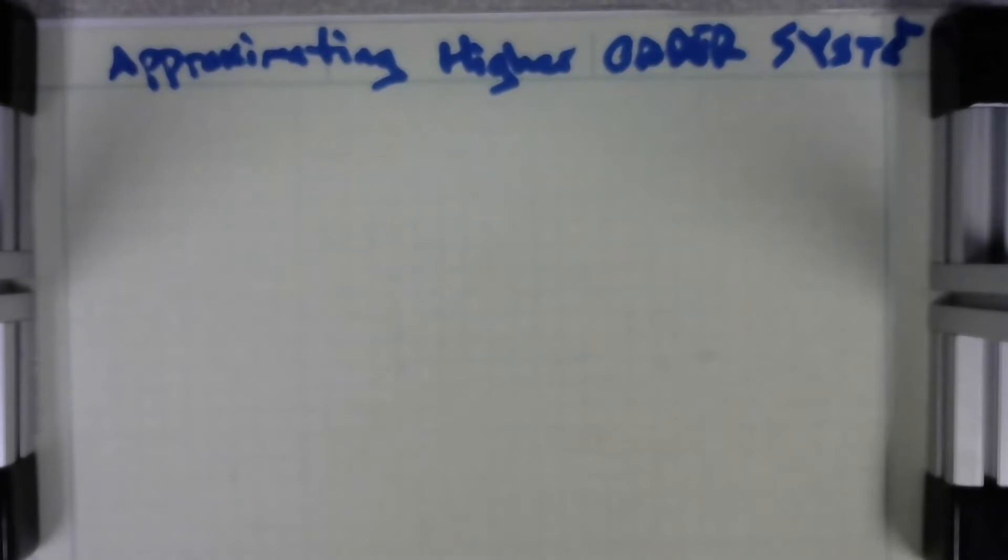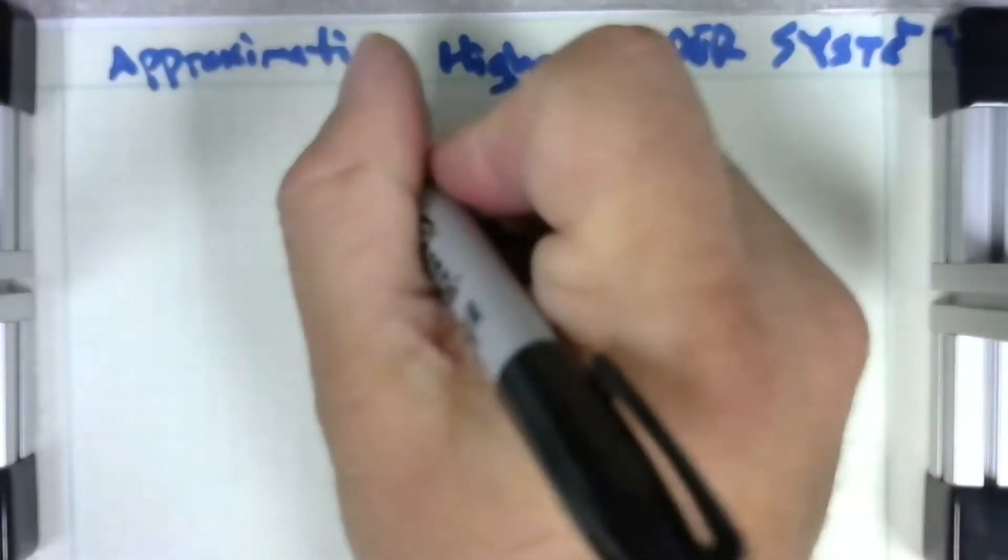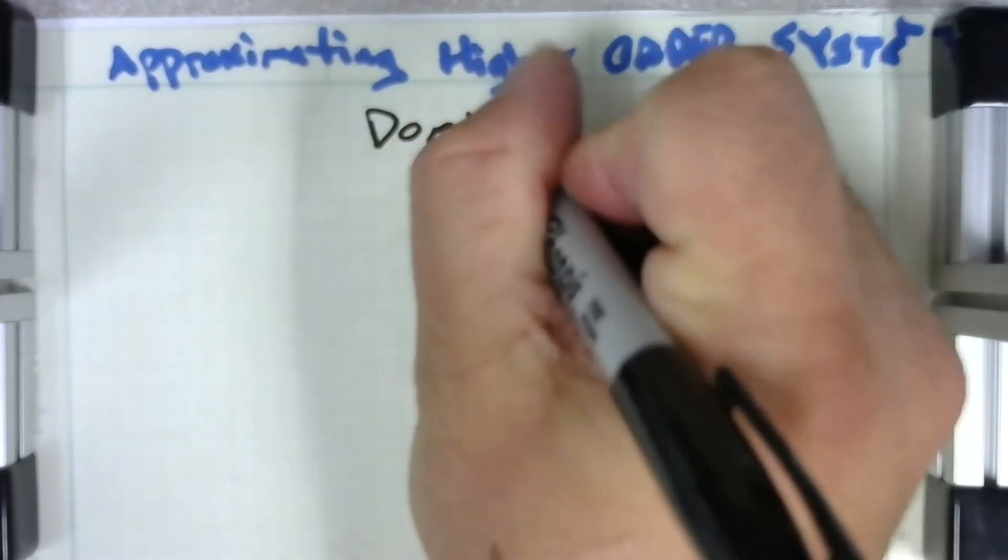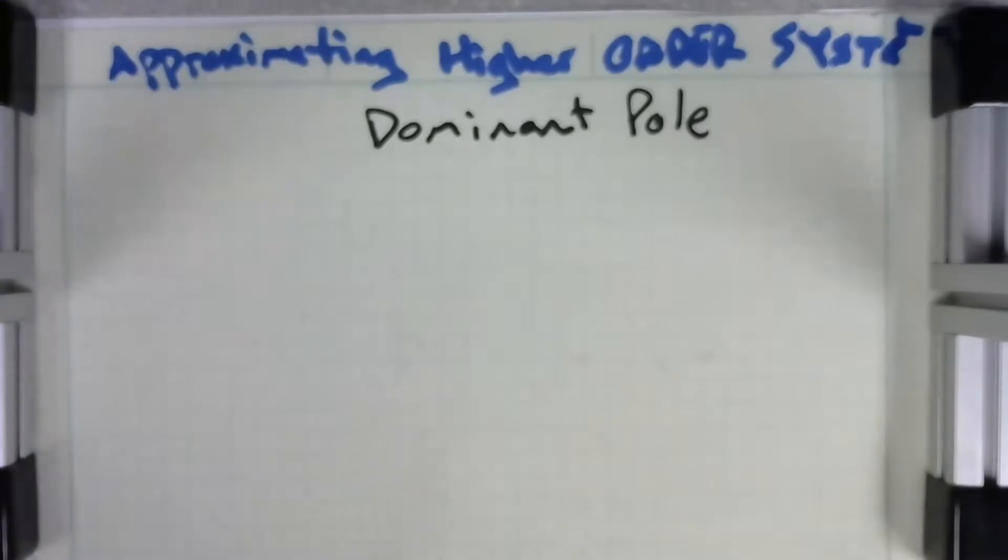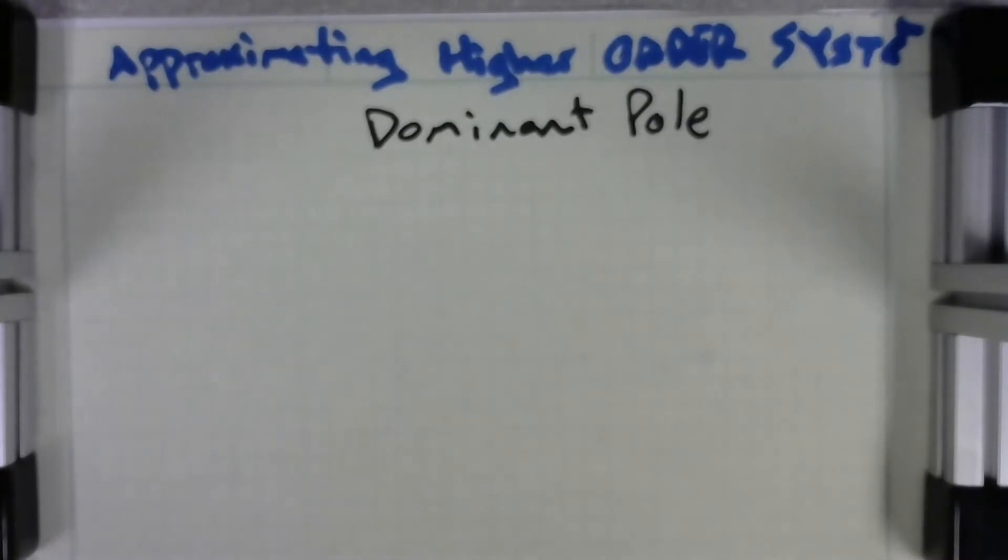Well, there's different things you can do. You can, for instance, use Taylor series to approximate the same system in a lower order, or you can deal with it in state space and it's pretty straightforward that way. Probably the easiest thing to do is the dominant pole approximation.